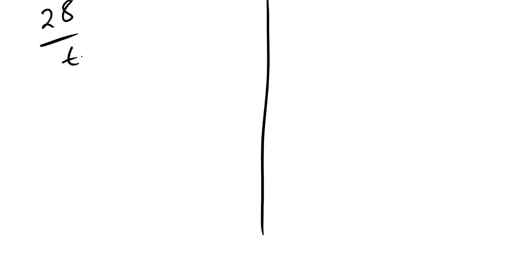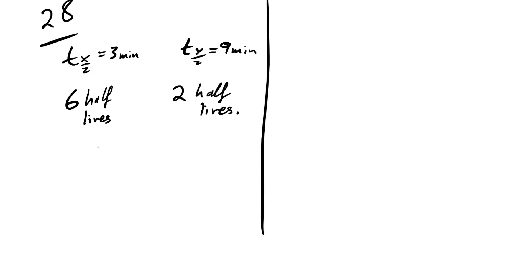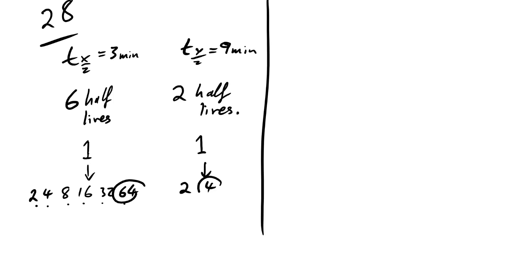Question 28: X has half-life 3 minutes, Y has half-life 9 minutes. After 18 minutes the number of radioactive nuclei in both samples is the same. Find the initial ratio Nₓ/N_Y. 18 minutes = 6 half-lives for X, 2 half-lives for Y. If both end with 1 nucleus, X started with 2⁶ = 64, Y started with 2² = 4. So the ratio Nₓ/N_Y = 64/4 = 16.